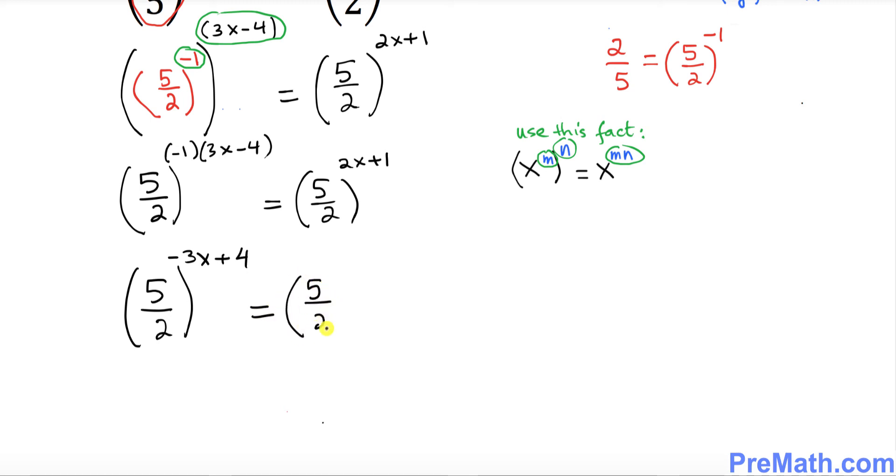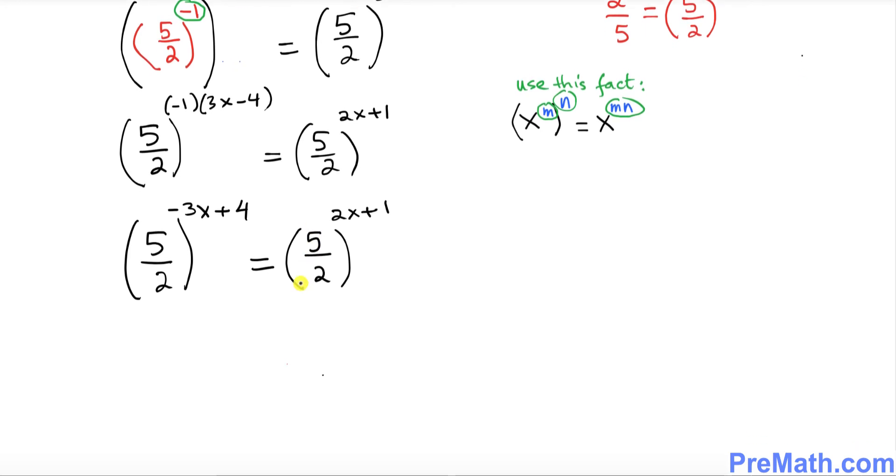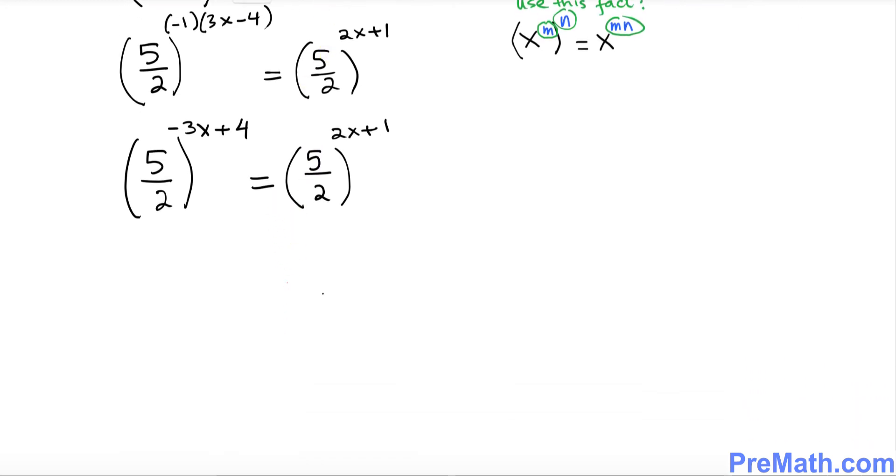So far so good. Now the next thing we want to do: I want you to see one thing. See, right now we have the same bases, 5 over 2 on the bottom left hand side and 5 over 2 on the right hand side. As long as the bases are the same, that means you can set these two exponents equal.